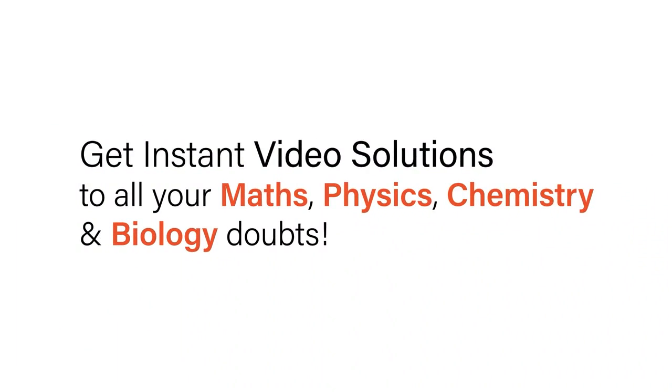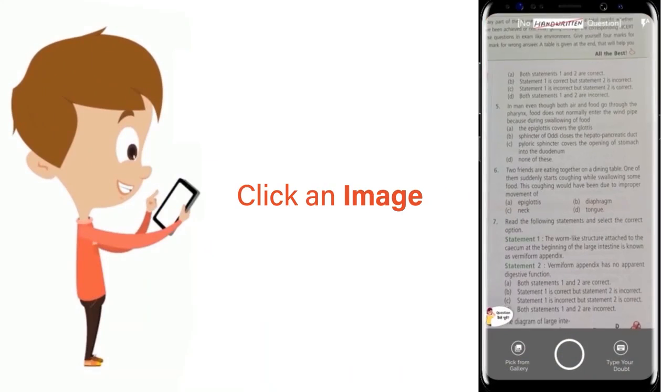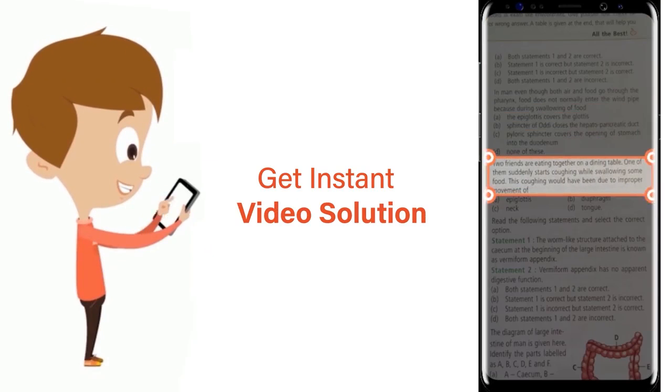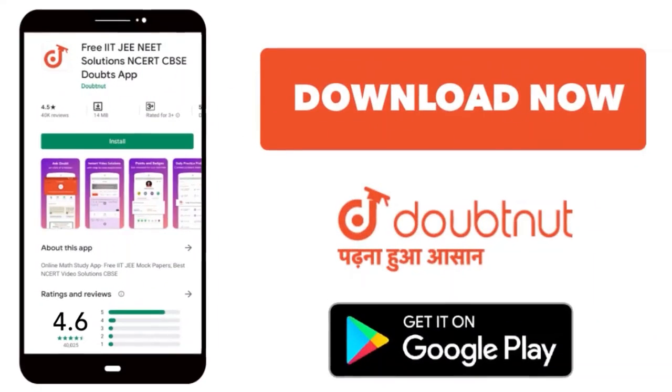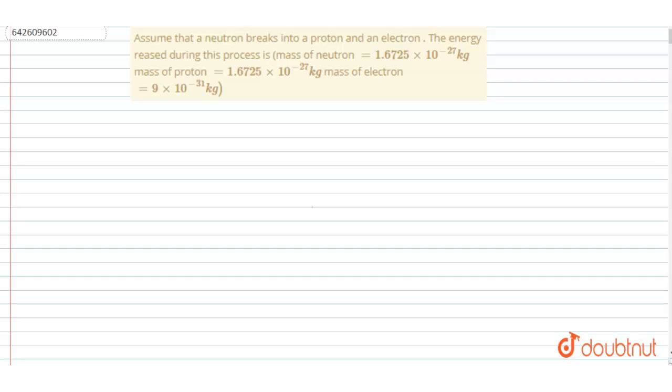With Doubtnet, get instant video solutions to all your math, physics, chemistry, and biology doubts. Just click the image of the question, crop the question, and get instant video solution. Download Doubtnet app today. Hello everyone, assume that a neutron breaks into proton and electron.